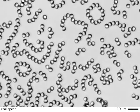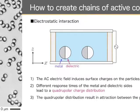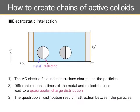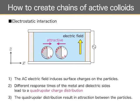How do the particles interact and form such chains? Under the AC electric field with frequency higher than a certain threshold frequency, induced electric charges on the surface of the particles have opposite signs on the two hemispheres, due to the difference in the response time of the dielectric and the metal hemispheres. This quadrupolar charge distribution results in attractive interaction between the particles, and this attractive interaction is responsible for the chain formation.